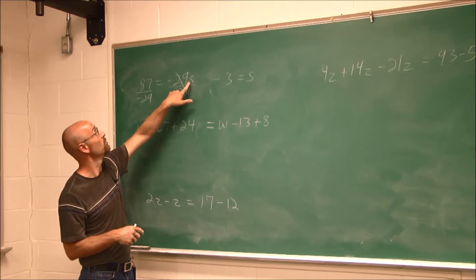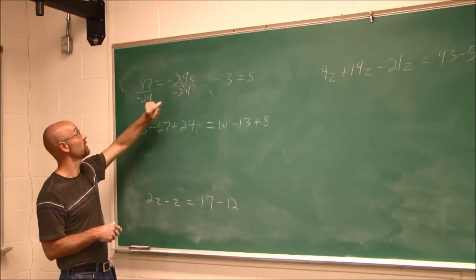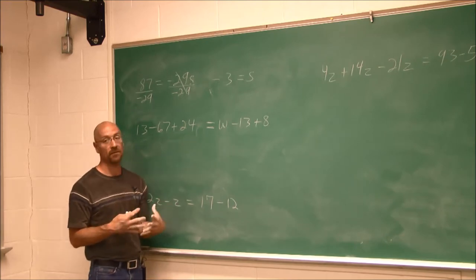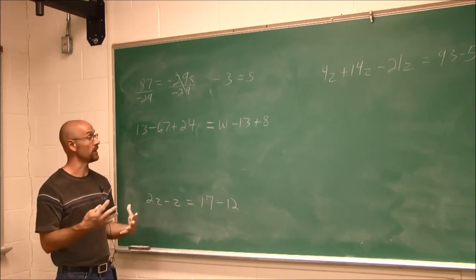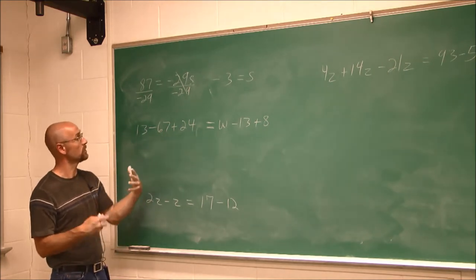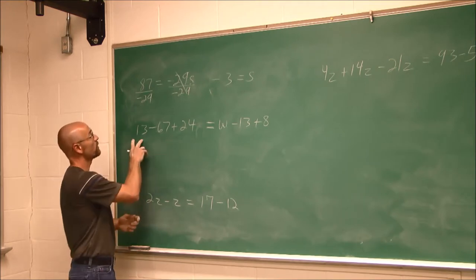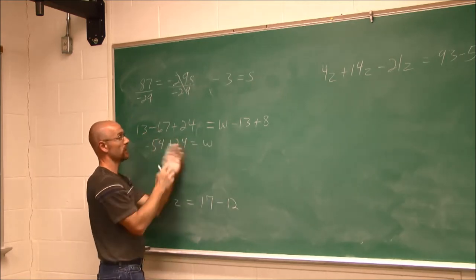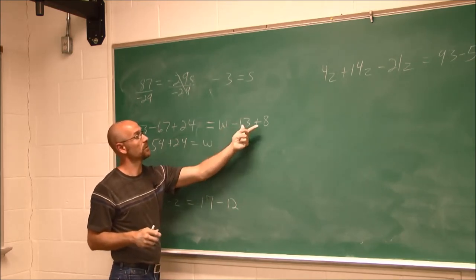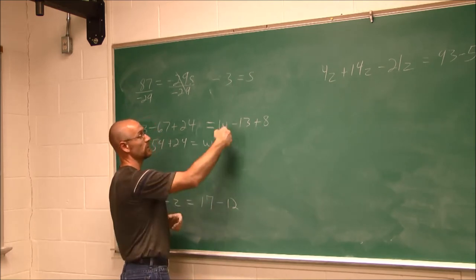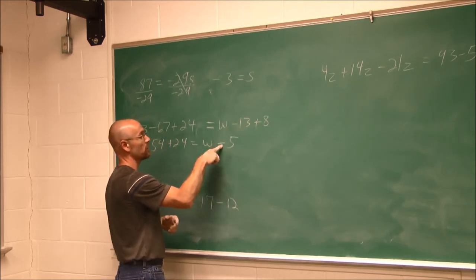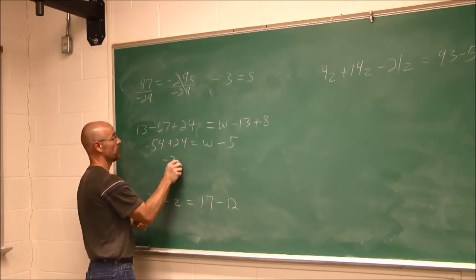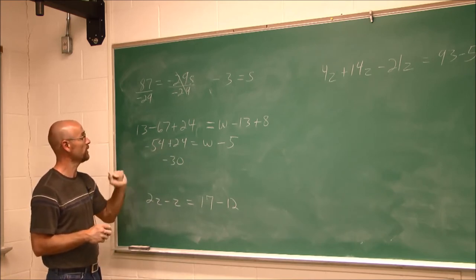We can plug it back in and check: if I put in negative 3, a negative times a negative is a positive. 3 times 29 is 87, so that makes it a true statement. Sometimes we have to combine like terms before isolating the variable. Looking at this example: on one side we have integers — 13 minus 67 is negative 54. On the other side, I have w minus 13 plus 8. Those are like terms I can combine. Different signs — the difference of 13 and 8 is 5, the larger number is negative — so it's negative 5.